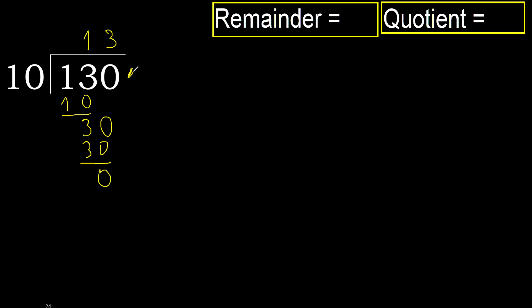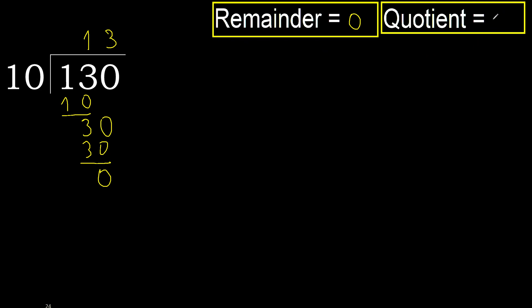Next — that is not a number, therefore finish. 130 divided by 10 is 13.